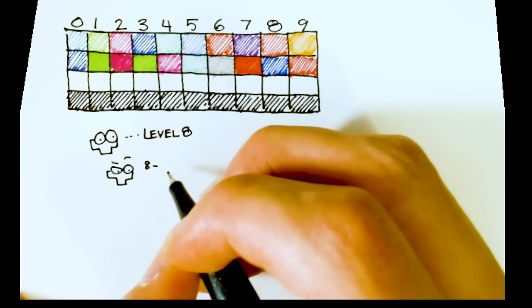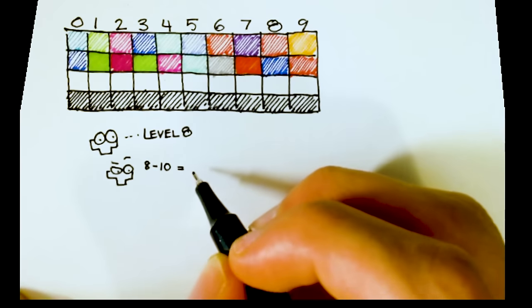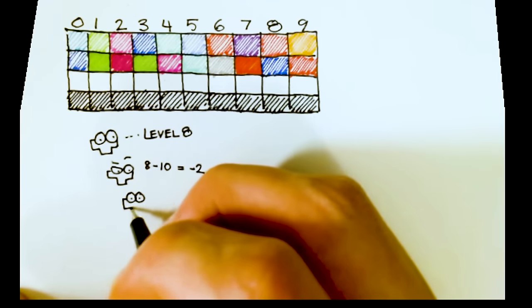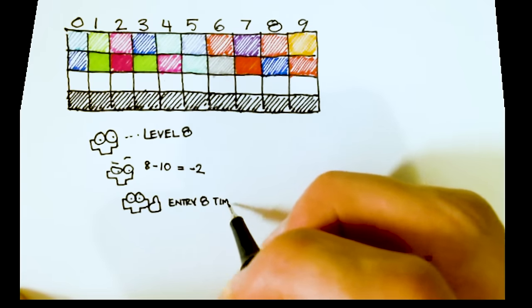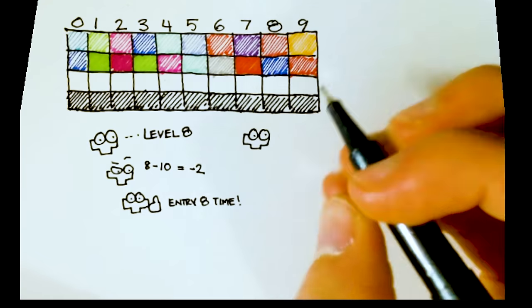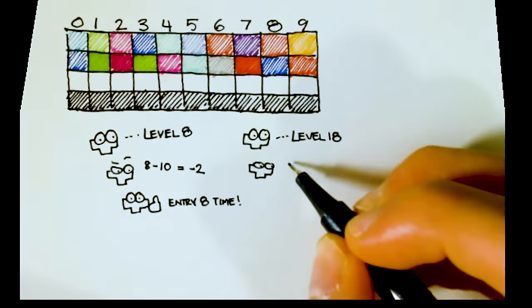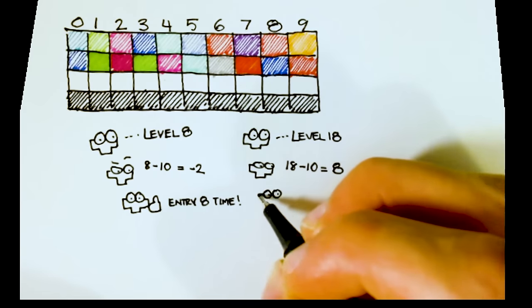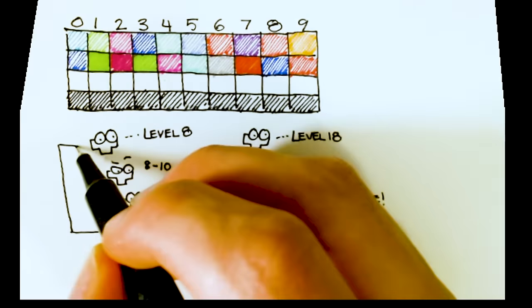The way it checks whether the level is below 10 is by checking that if it were to subtract 10, whether the value would be negative. In the case of 8, this is negative 2, so the game loads the 8th table entry. In the case of 18, this is positive 8, so it subtracts 10 and then tries again.